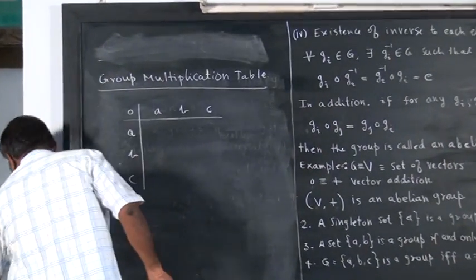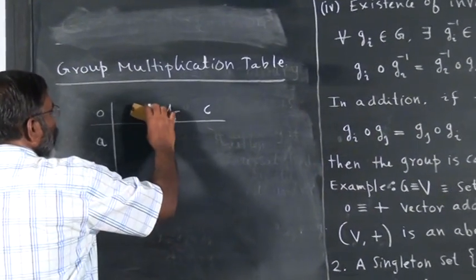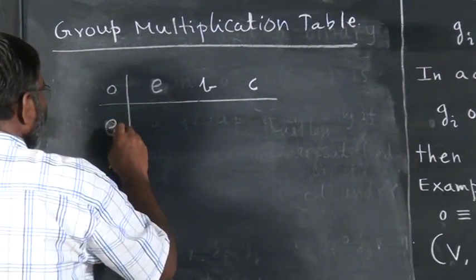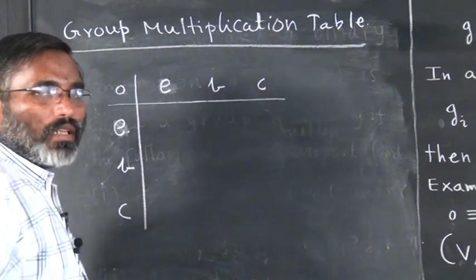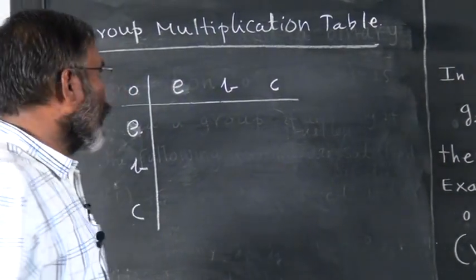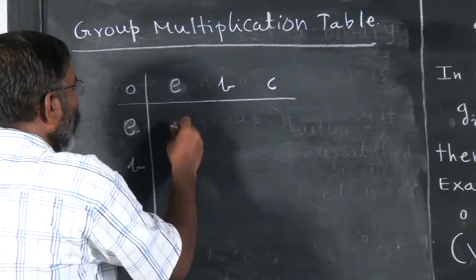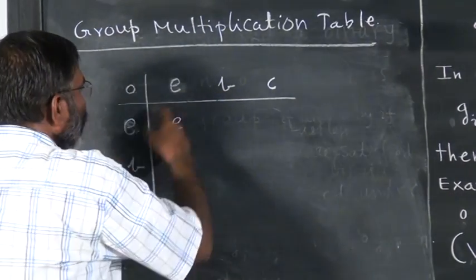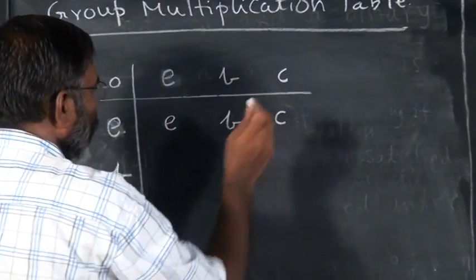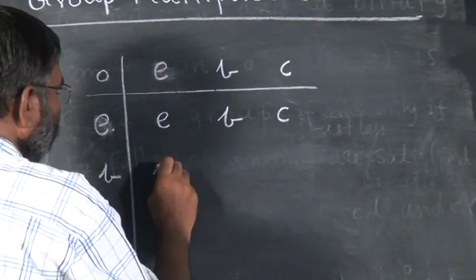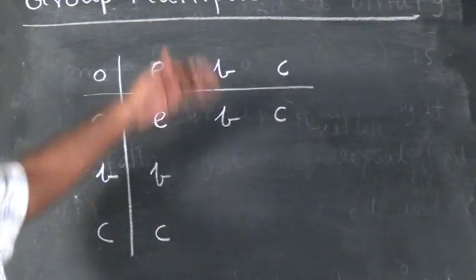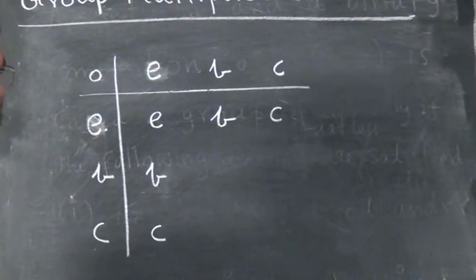Already, for three elements to be a group, we must have A be identity. At least one element should be designated as identity. Now, if identity is composed with identity, we have E. Identity composed with B is B. Identity composed with C is C. Similarly this column and this row you can immediately fill up, because they will be the same elements as the group.